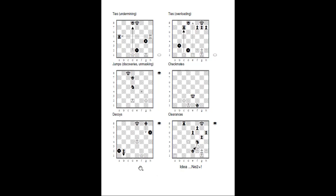Decoys are where we try to attract a piece to a square so we can do damage. If the black pawn moves to b1 it promotes, checking the white king and attacking the white queen on f1. If queen takes on b1, we've decoyed the white queen to b1 — queen to g6 is check, a skewer, the king must move, and then queen takes b1. Black is a whole queen ahead.